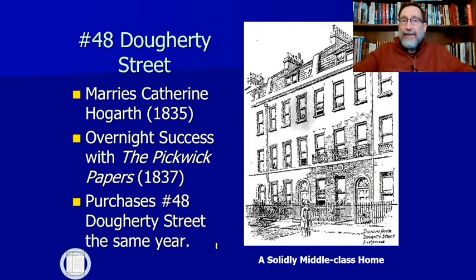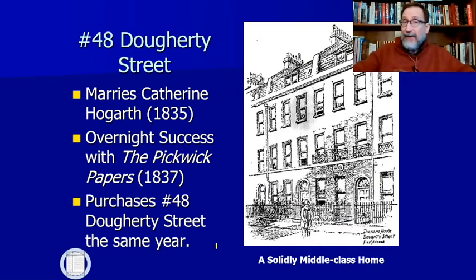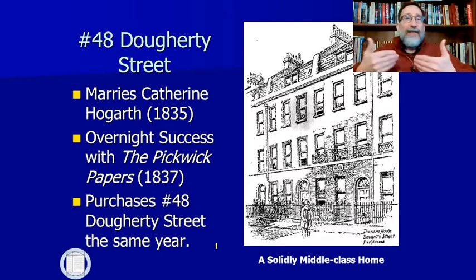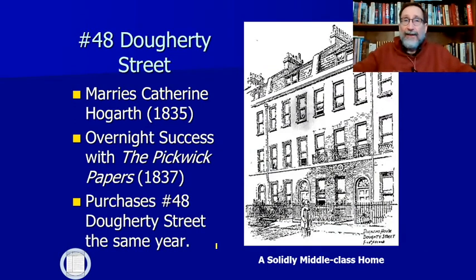He met a woman named Catherine Hogarth, and now that he's solidly middle class, he can marry her. Their marriage lasts through his entire life, but unfortunately they're going to be separated later on. Catherine is not educated — she's evidently a wonderful, doting mother, but she doesn't read, and she's married to an author. They're going to drift slowly apart as their life together moves on.